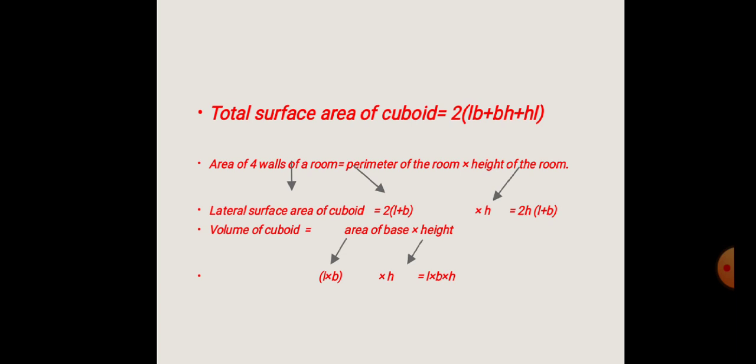To find the area of 4 walls of a room, we exclude the top (roof) and bottom (floor). This gives us the perimeter of the room multiplied by the height. Since a room is rectangular in shape, the formula is 2(L + B) × H. This is also called the lateral surface area or curved surface area of a cuboid: 2H(L + B).